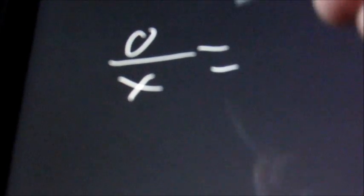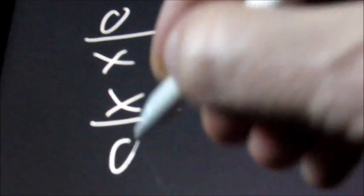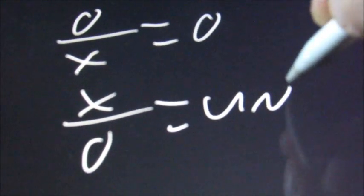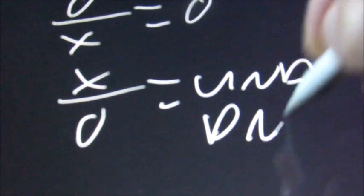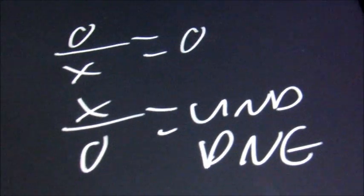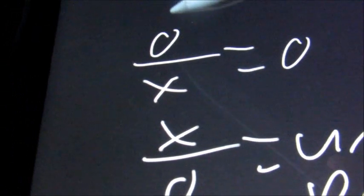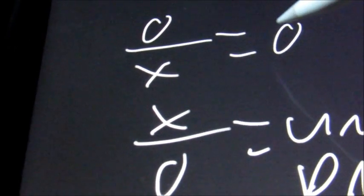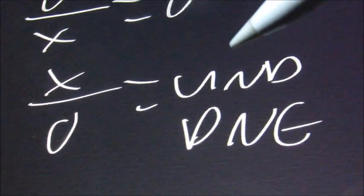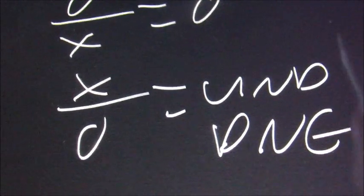Next, we're going to have a few things. 0 divided by x, which is 0 divided by anything, is going to equal 0. But if we have anything divided by 0, that's going to be undefined, or DNE for does not exist. So if 0 is on top, the answer is 0. If 0 is on bottom of the fraction, it's going to be undefined.